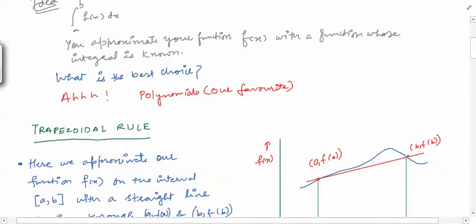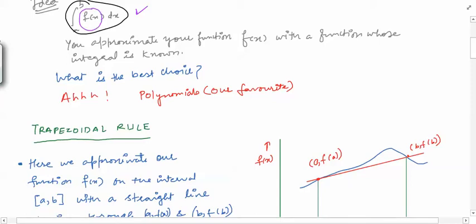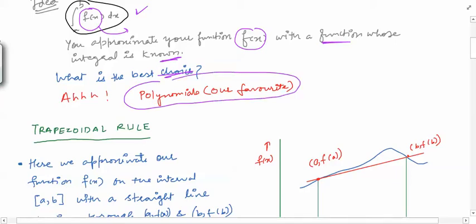So we will consider the integral from a to b of f(x) dx. Suppose this is the integral we want to compute and somehow we are not able to compute it with usual mathematical techniques. The idea is: this function is complicated — can you replace it with some simple function whose integration you know? So you approximate f(x) with a function whose integral is known. Polynomials are our favorite functions, so we approximate f(x) with a polynomial and integrate that. We have many ways depending on how many nodes we use. We start with the first numerical integration technique: the trapezoidal rule.